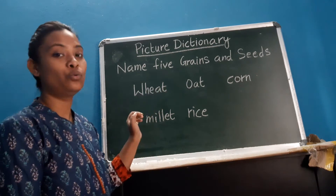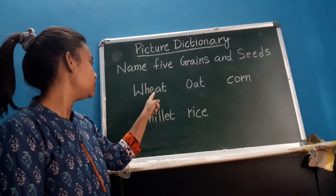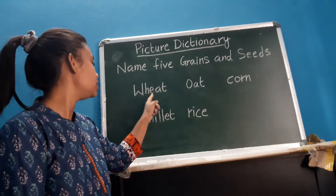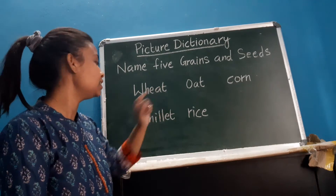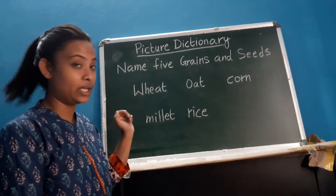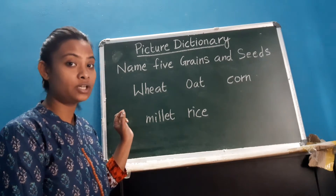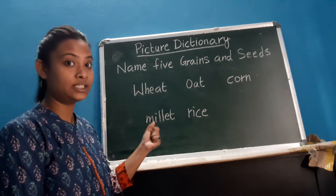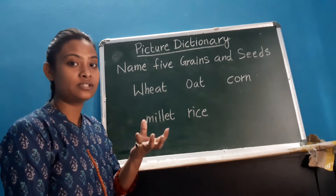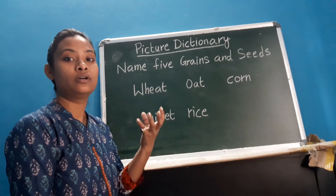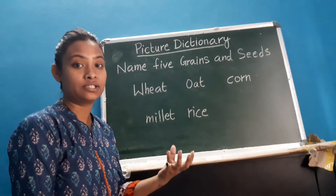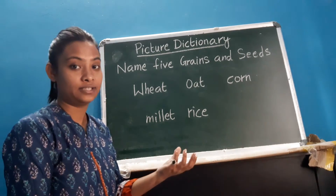The first one is wheat. W-H-E-A-T, wheat. Wheat is a grain. It is brown in color. After grinding this wheat, we get a powder substance that is used to make chapati, which we eat early morning or at night.